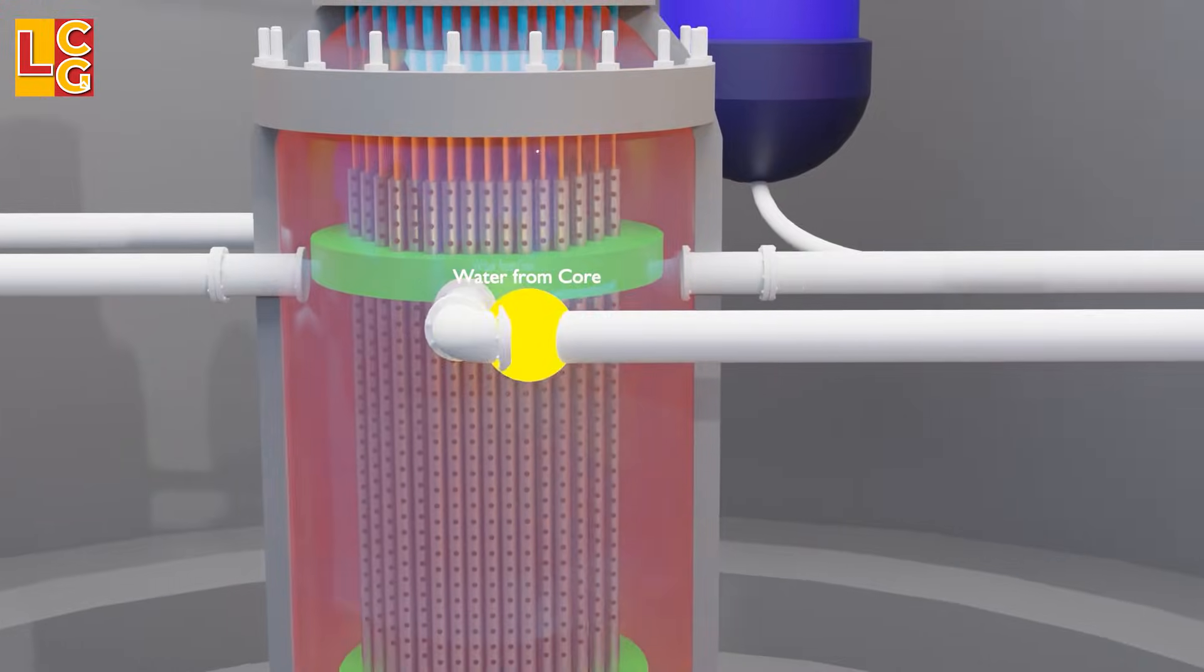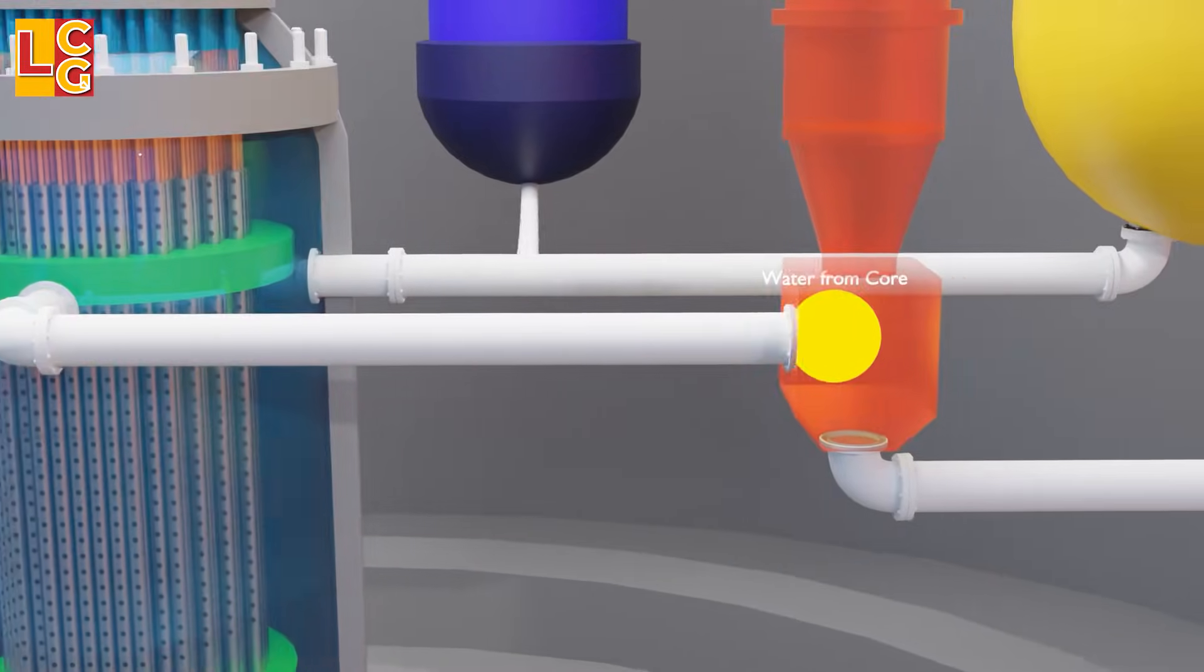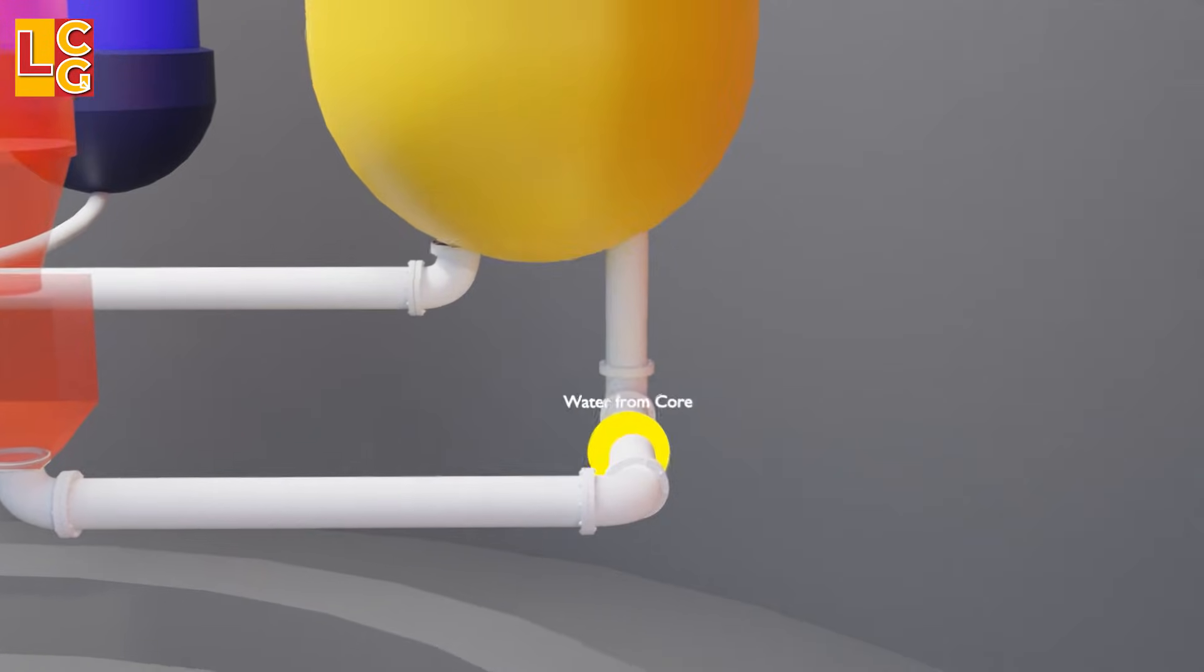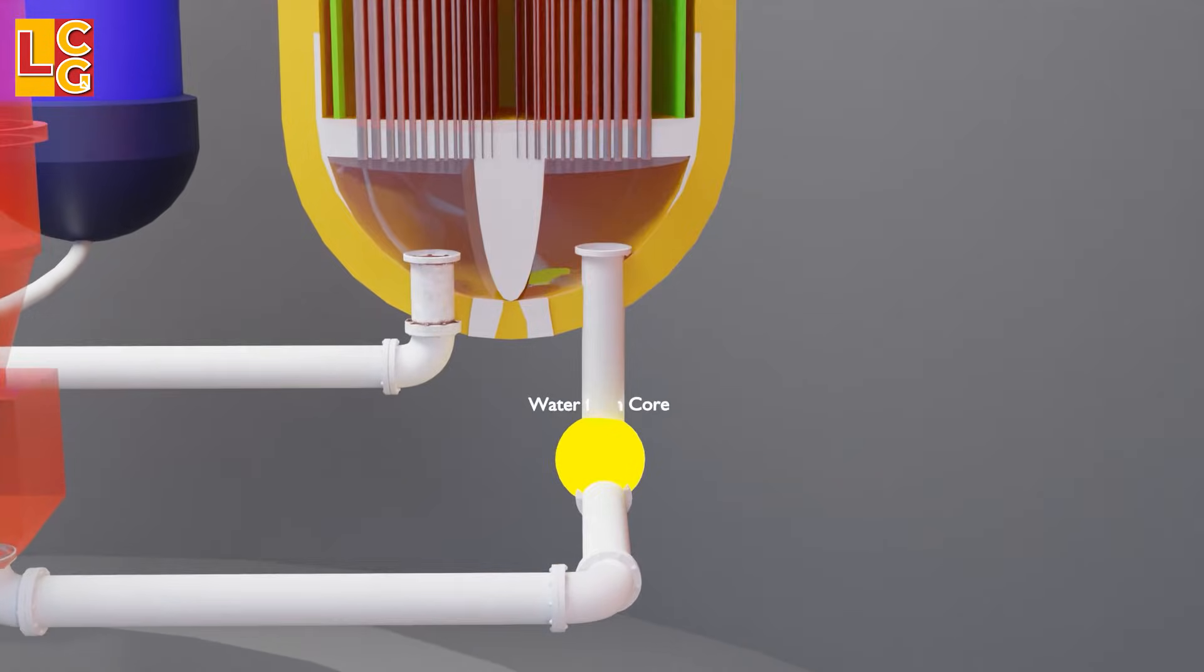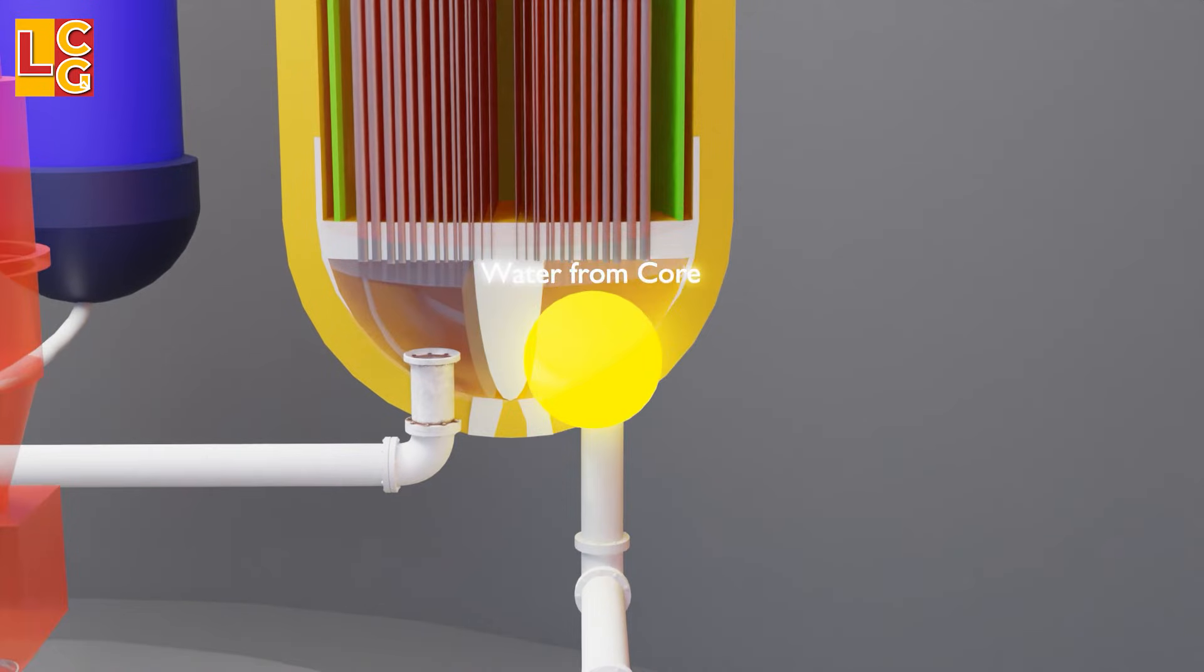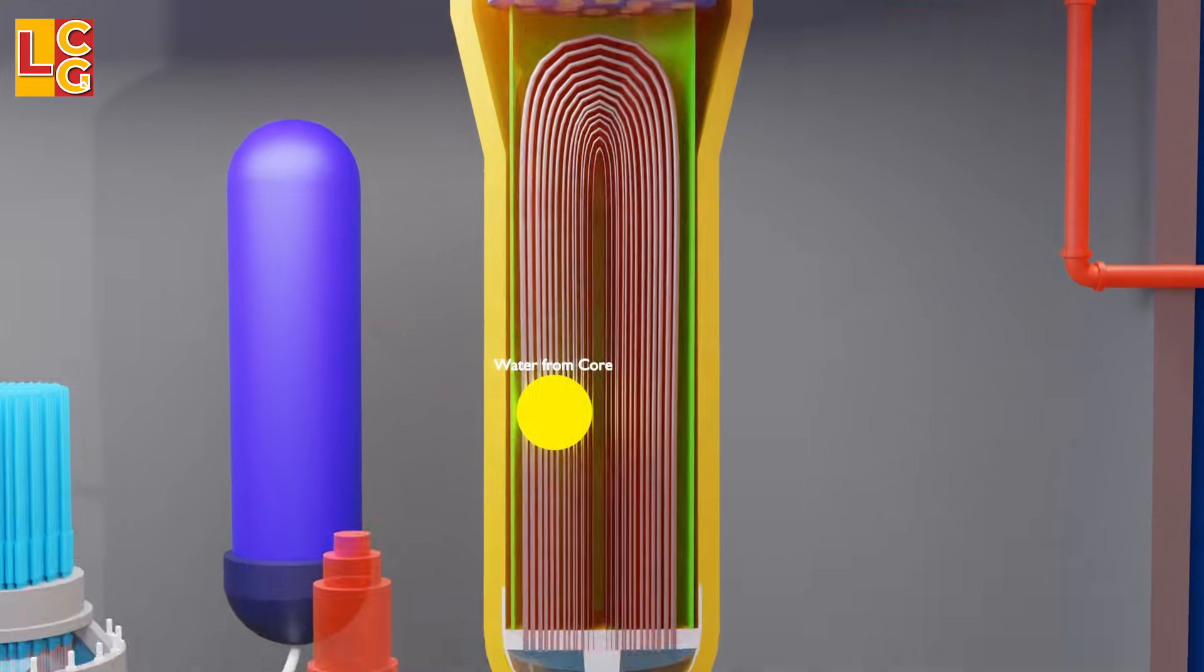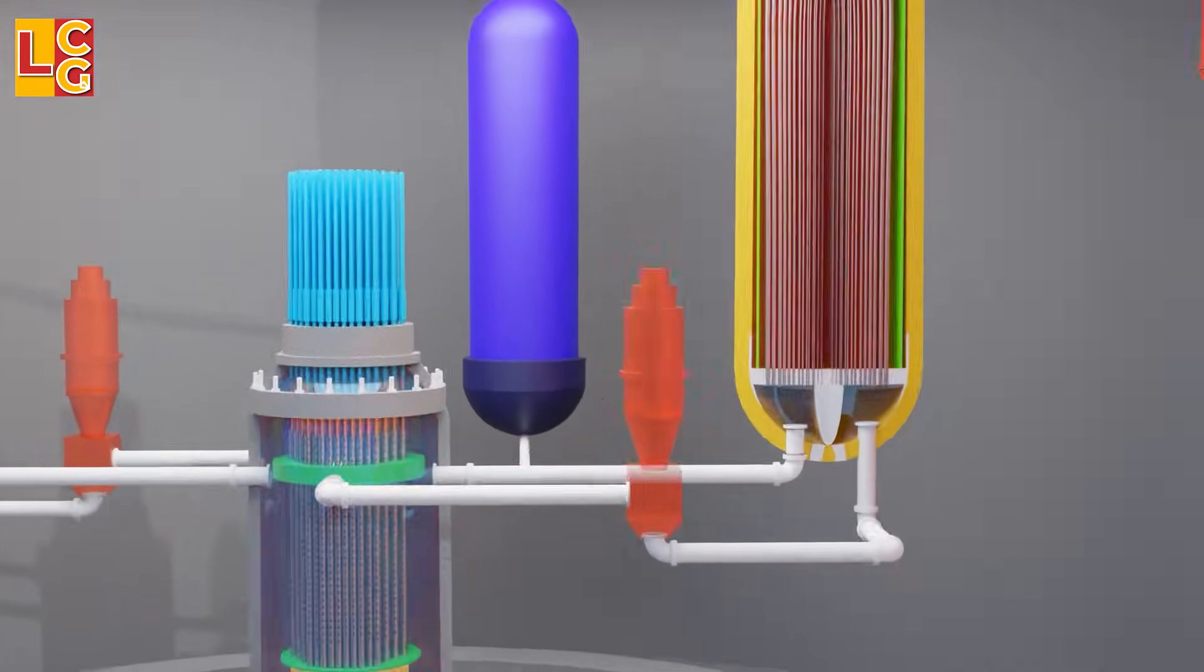The very hot water inside the reactor vessel is then pumped out to the steam generator through this tube. Then, through this inlet, the hot water goes through these tube bundles. Then it goes back to the reactor core.